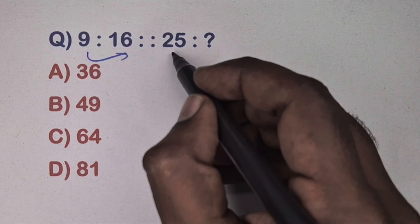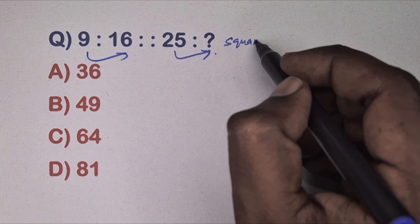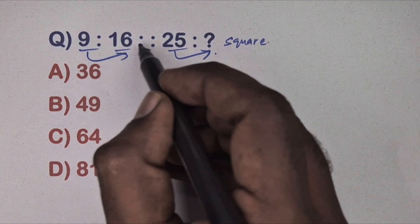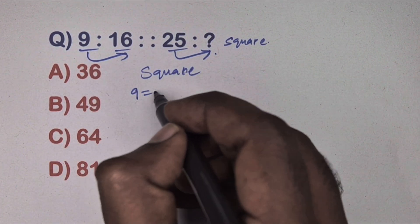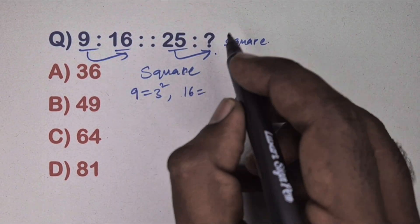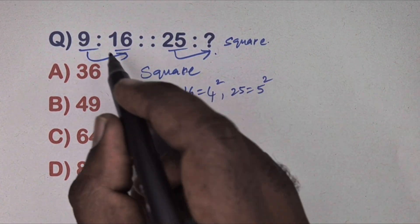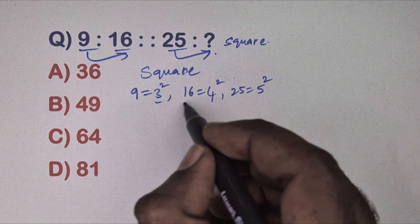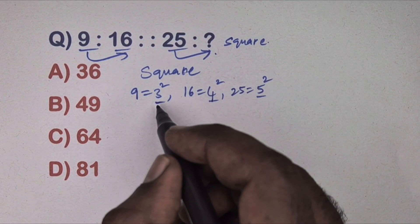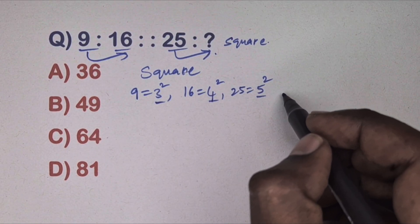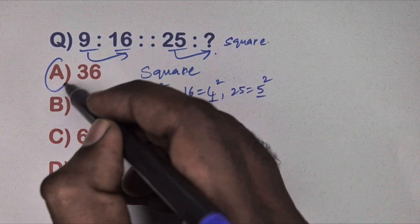Next question: 9 is related to 16 and 4 is related to which number? This is a square relation. Look at the numbers — 9, 16, 25 are all squares. Write 9 as 3², 16 as 4², and 25 as 5². The bases are 3, 4, 5 — adjacent numbers. After 5 comes 6, so the answer is 6 squared, which equals 36. Option A is correct.